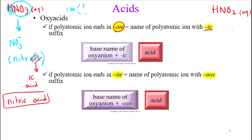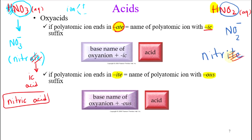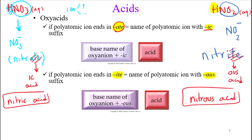Next example HNO2: remove hydrogen, we have NO2 one-negative — we call that nitrite. The rule says change '-ite' to '-ous acid'. So we call that nitrous acid. So to remind you: '-ate' we change to '-ic acid', and '-ite' we change to '-ous acid'.